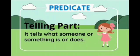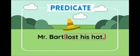Let's move on to the next part, that is predicate. The second part of a sentence is the predicate. The predicate always has the verb. It tells what the subject is or does — in other words, it tells what someone or something is or does. Let's take a look at this sentence: Mr. Bart lost his hat. Which part shows what Mr. Bart did? He lost his hat. So, 'lost his hat' is the predicate of this sentence.